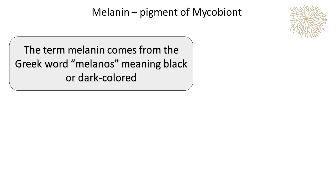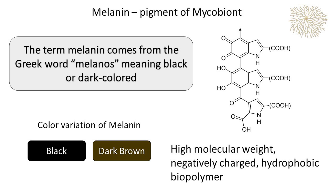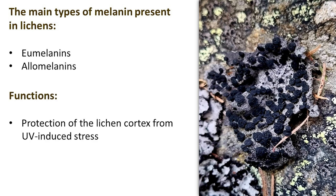Melanins in lichens are typically produced by the fungal components of the lichen body. The term melanin comes from the Greek word melanos, meaning black or dark colored. Melanins are usually dark brown or black pigments of high molecular weight that are negatively charged, hydrophobic in nature, and formed via the oxidative polymerization of phenolic or indolic compounds. Eumelanins and allomelanins are the main types of melanins present in lichens, with some structural differences and distinct physical properties. Light absorption by melanin protects the lichen cortex from UV-induced stress, allowing lichens to tolerate radiation for long periods.